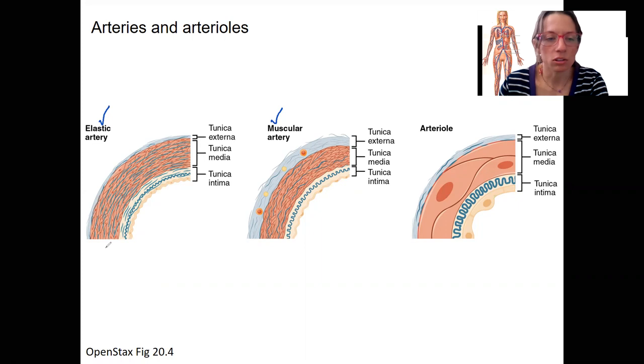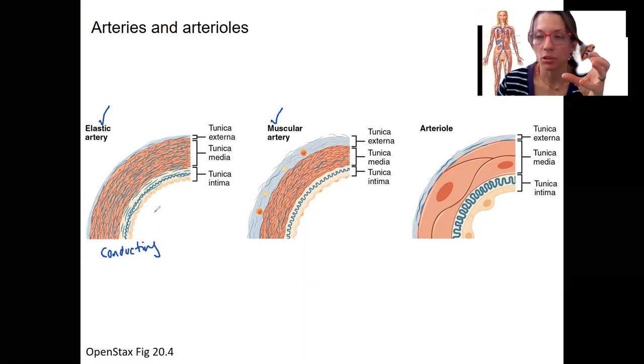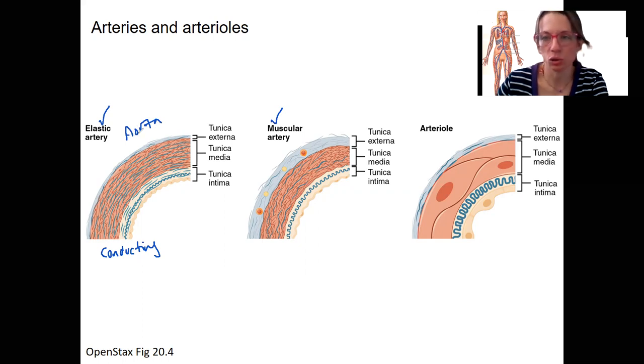These elastic arteries are also called conducting. These elastic fibers allow them to stretch and then recoil when blood is coming through - blood coming right from the heart. So the aorta is an example of an elastic artery. This elastic tissue would continue further from the aorta as well.